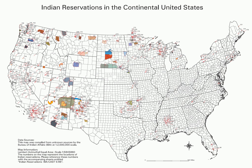Most of the tribal land base in the United States was set aside by the federal government as Native American reservations. In California, about half of its reservations are called rancherias. In New Mexico, most reservations are called pueblos. In some western states, notably Nevada, there are Native American areas called Indian colonies.